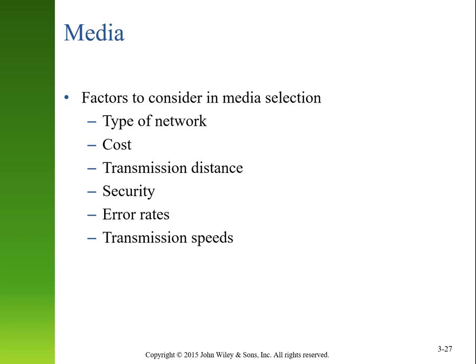When considering what type of media to use, you need to consider many different factors: what sort of network you're operating — a satellite dish doesn't make sense for a local area network, and twisted pair is impractical for networks spanning thousands of miles. You need to consider cost, how far you want to broadcast, and convenience versus security — if you're particularly concerned about security, wireless or radiated media may not be an option. You also need to think about your tolerance for error rates, since wireless media often has many more errors than guided media. Fiber optic is often the cleanest and most secure but also the most expensive.